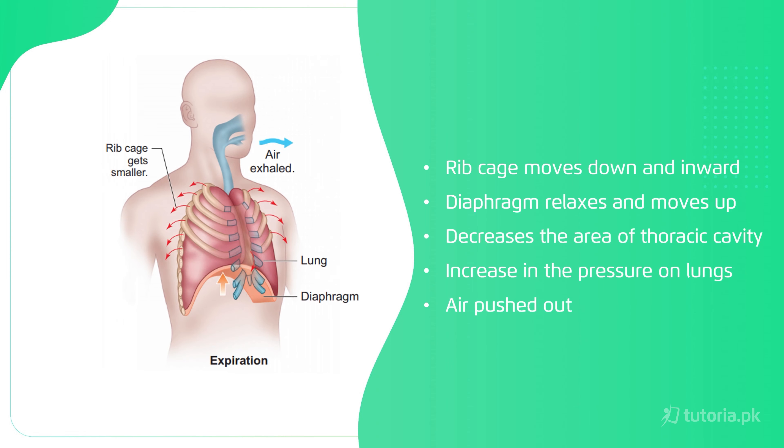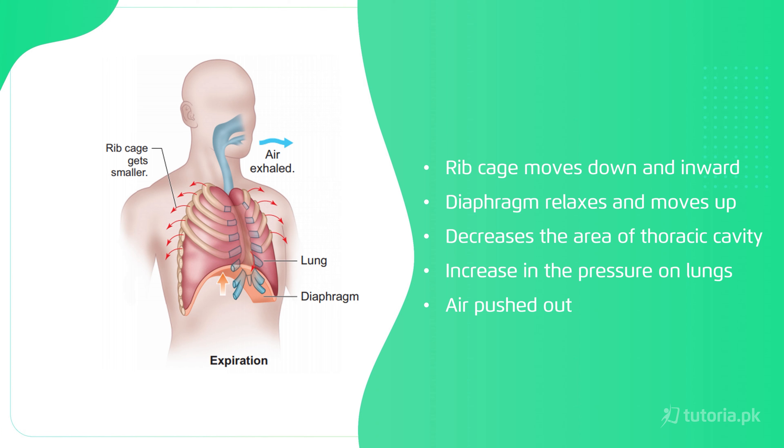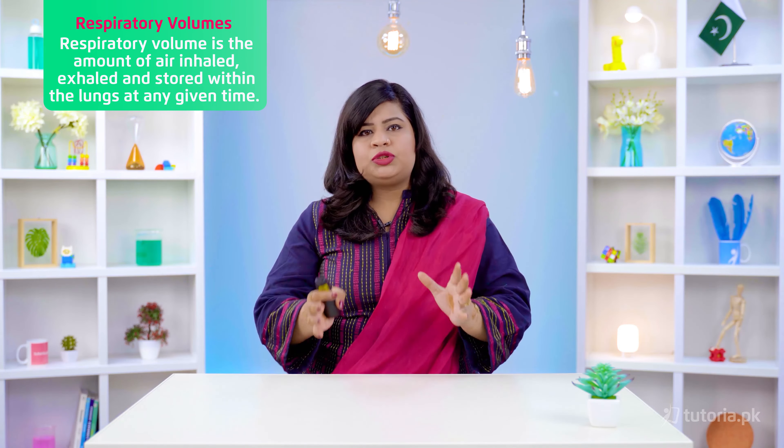During expiration, the opposite happens: the rib cage moves downward and inward, and the diaphragm moves upward. The space in the thoracic cavity decreases, pressure in the lungs increases, and air is pushed out of the lungs. Respiratory volume refers to the inhalation and exhalation; it is the amount of air inhaled, exhaled, and stored within the lungs at any given time.